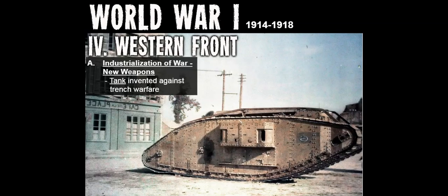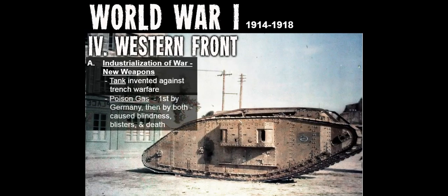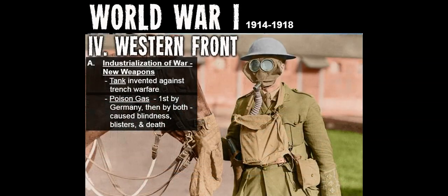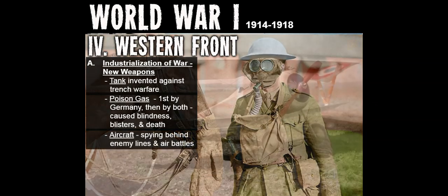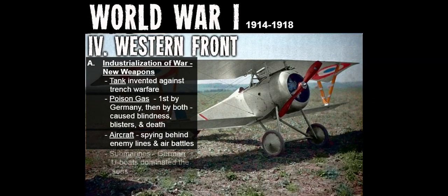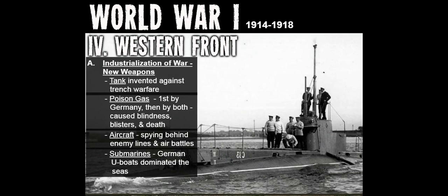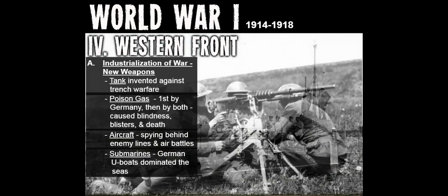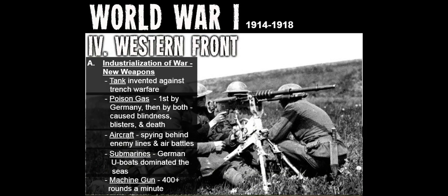There were numerous new weapons in the industrialization of the war. Tanks were invented to counter trench warfare. Poison gas was first used by Germany, then by both sides — it caused blindness, blisters, and death. Aircraft were used for spying behind enemy lines and air battles. German submarines known as U-boats dominated the seas. Machine guns could fire 400-plus rounds a minute. Modern weapons added greatly to the destructiveness of war — rapid-fire machine guns mowed down waves of soldiers, and artillery allowed troops to shell enemy lines more than 10 miles away.